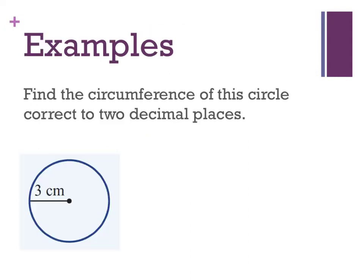Let's have a look at a first example. It says find the circumference of this circle correct to two decimal places. I've been given the radius, so I'm going to go with the formula that my circumference equals 2π or 2 times π times the radius.